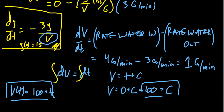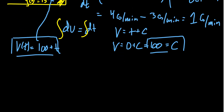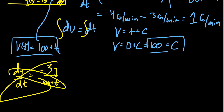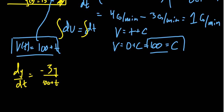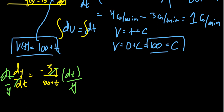Now we can substitute V(t) = 100 + t into our differential equation, so dy/dt equals negative 3y over (100 + t). This is also a separable differential equation. Multiply both sides by dt and divide both sides by y, which gives dy/y = negative 3 over (100 + t) times dt.